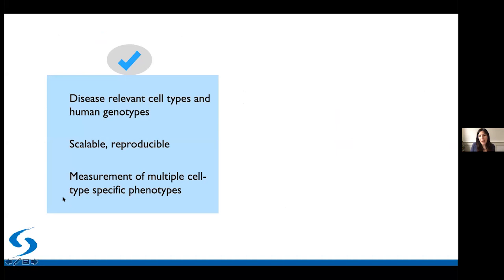It's a very exciting time to be studying these disorders using these models. We are now able to make many disease-relevant cell types—specifically cell types relevant to neuropsychiatric disease—from human genetic backgrounds that either carry or do not carry a combination of genetic variants of interest. Importantly, we are able to make a lot of these cell types from many different people in a reproducible way, and we are able to measure phenotypes from many different cell types either at the same time or in the arrayed format.